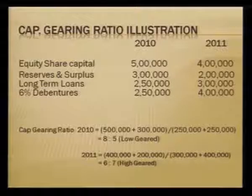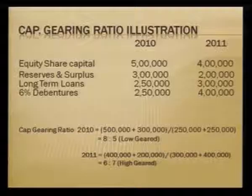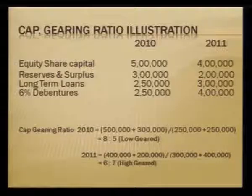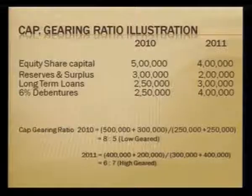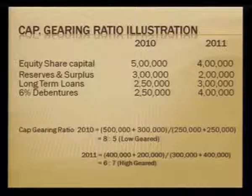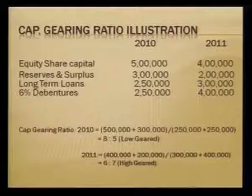For 2010, capital gearing ratio = equity shareholders' fund (₹5 lakh + ₹3 lakh reserves = ₹8 lakh) ÷ fixed interest bearing funds (long-term loans + debentures = ₹5 lakh) = 8:5. For 2011, equity = ₹4 lakh + ₹2 lakh = ₹6 lakh; fixed interest bearing funds = ₹7 lakh; ratio = 6:7. In 2010 the firm is low geared (equity > debts); in 2011 it is high geared (fixed interest funds exceed shareholders' fund).